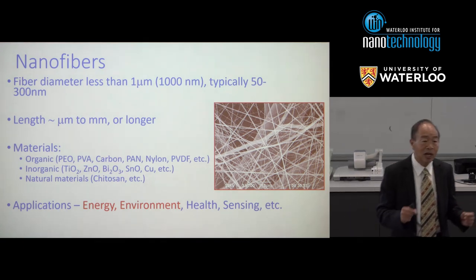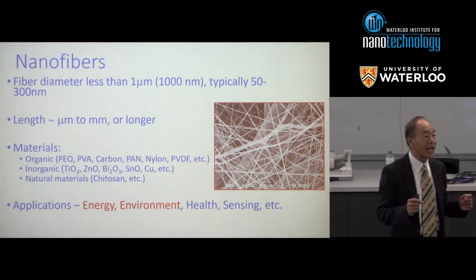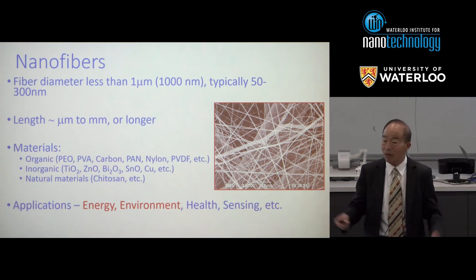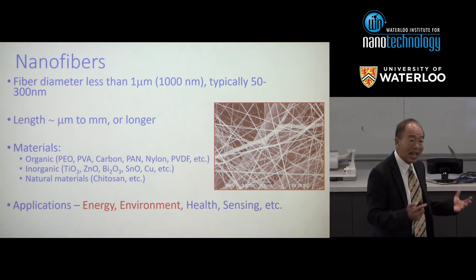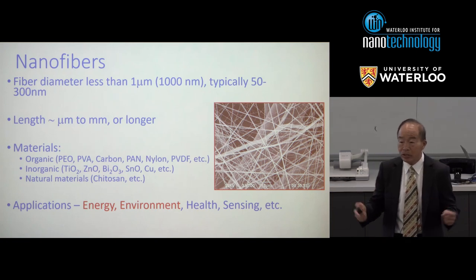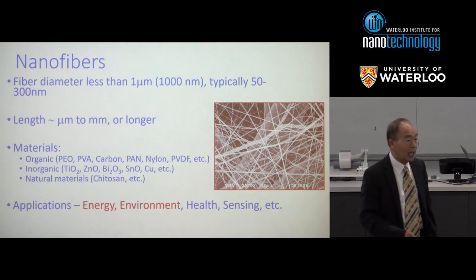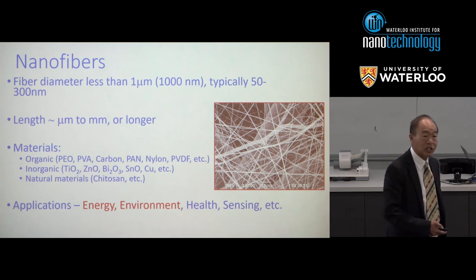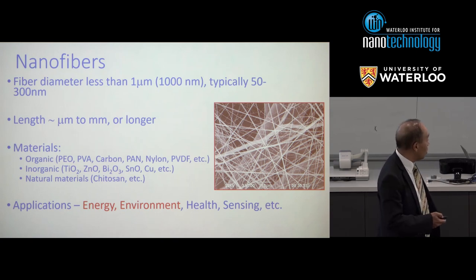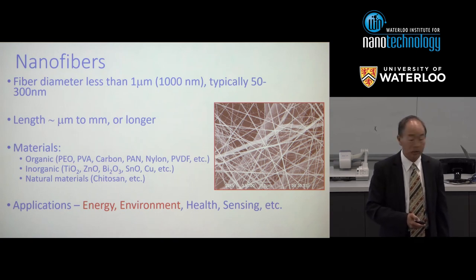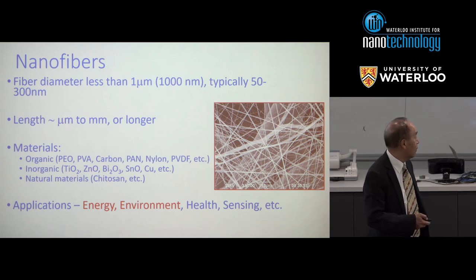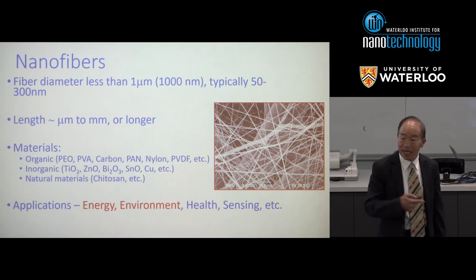What are nanofibers? By definition, fiber diameter less than 1,000 nanometers, or what we call one micron. Length-wise, it can vary anywhere from microns to millimeters or even longer. As far as materials are concerned, you can make it from organics, polymeric, inorganic, and also natural materials. The applications are quite wide — energy, environment, health sensing, et cetera.